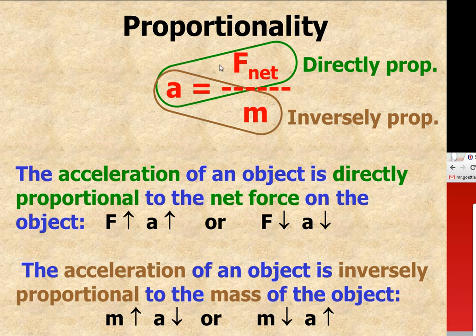Anytime you see an equation where you have a variable on top, it's always going to be directly proportional to the other variable on the other side. Anytime you see a variable in the bottom of a ratio, it's going to be inversely proportional to whatever variable is on the other side of the equation.